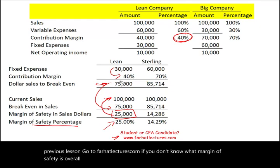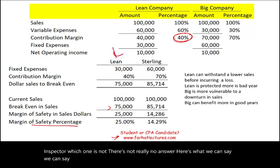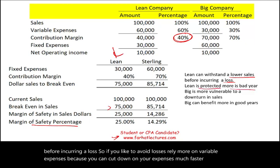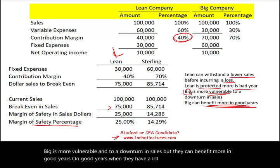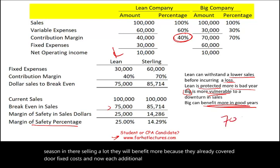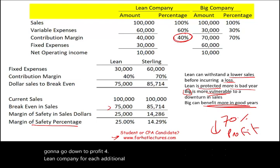Overall, what can we say? There's no single right answer about which cost structure is better. Lean company in bad times can withstand lower sales before incurring a loss. If you want to avoid losses, rely more on variable expenses because you can cut down on expenses much faster. Lean is protected in bad years; big company is more vulnerable to a downturn in sales. But big can benefit more in good years — when they have a lot of sales, they already covered their fixed costs, and now 70% of each additional dollar goes to profit. For lean company, only 40% of each additional contribution margin dollar goes to the bottom line.